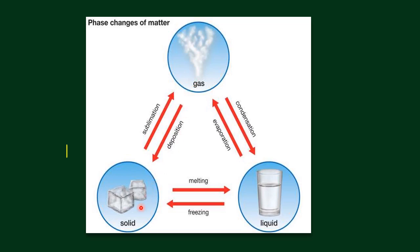The reverse of sublimation — from gas to solid — is called deposition. Gas to liquid is called condensation. An example of condensation would be rain: water vapor turns to its liquid form. The opposite of condensation — liquid to gas — is called evaporation. Solid to liquid is called melting, like melting of ice to water. And the opposite of melting — from liquid to solid — is called freezing.